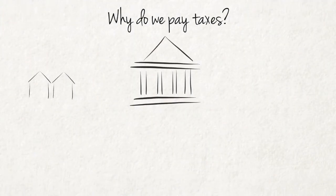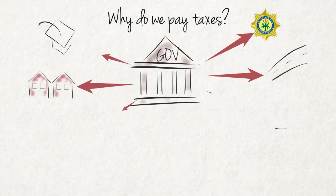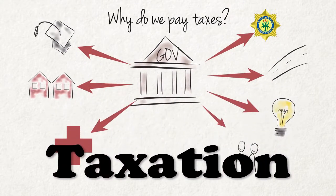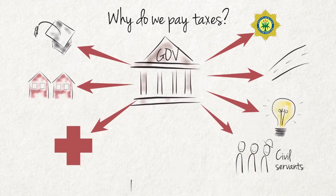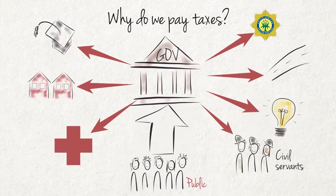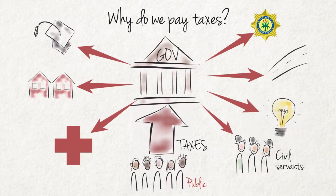Governments provide public services such as police services and roads to the public. The government also pays the salaries of civil servants. The public does not pay directly for these goods and services, or for the time of public servants when they visit government offices, but indirectly by means of taxation. The government must therefore regularly decide how much to spend, what to spend it on, and how to finance its expenditure. This is the reason why we pay taxes.